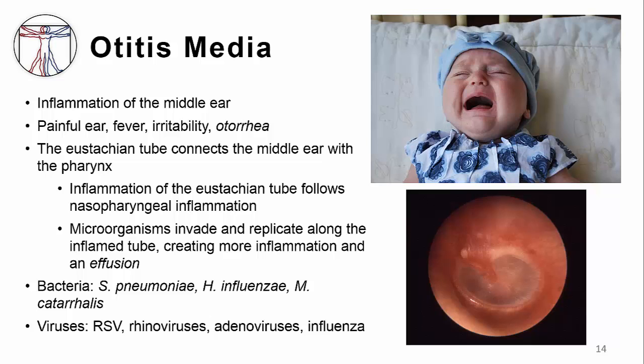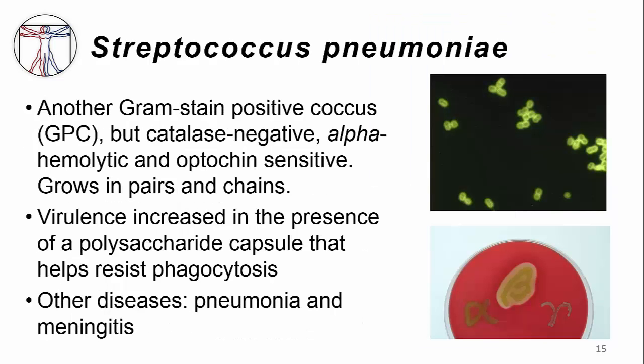One of the most common bacteria in otitis media is Streptococcus pneumoniae. This is another Gram-positive coccus like group A strep, but this one is catalase-negative, alpha-hemolytic — meaning it is incompletely hemolytic and optochin-sensitive in the lab. It grows in pairs and chains when you look at it under the microscope. Virulence is increased in the presence of a polysaccharide capsule that helps resist phagocytosis, and it causes lots of other diseases, including pneumonia and meningitis.